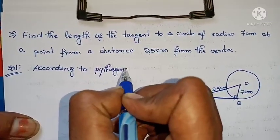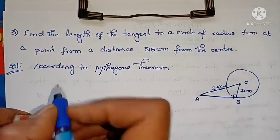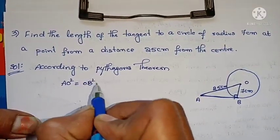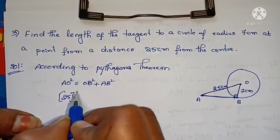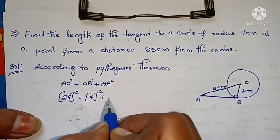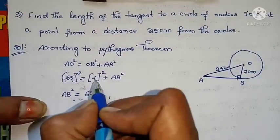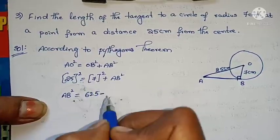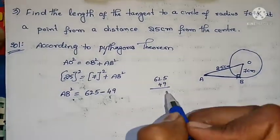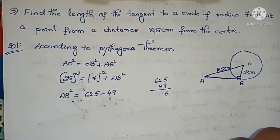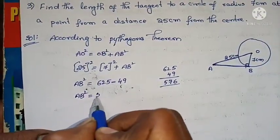By Pythagoras theorem: AO square equals OB square plus AB square. So 25 squared equals 7 squared plus AB squared. AB squared equals 625 minus 49, which equals 576.